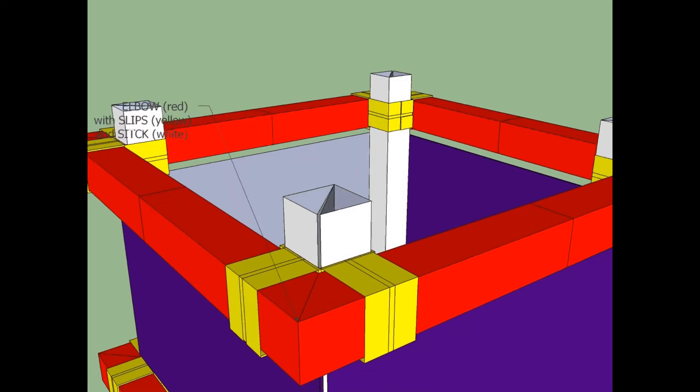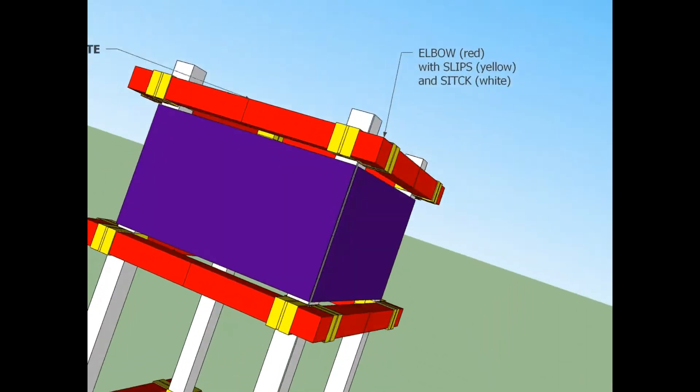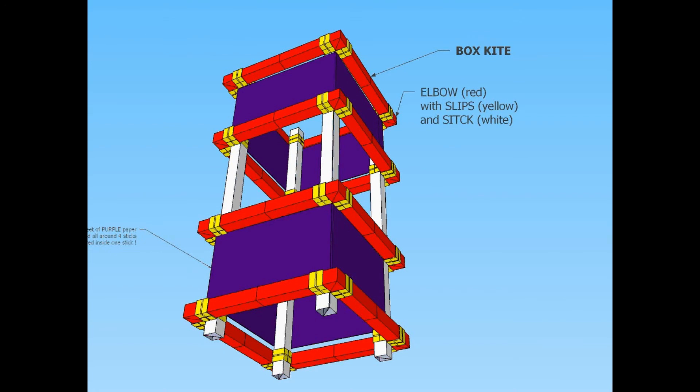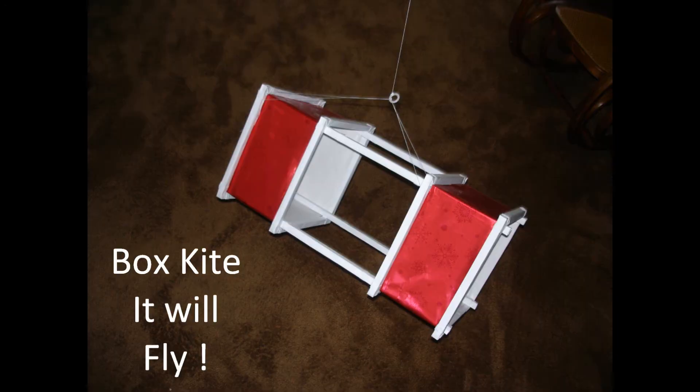Sticks can be bent with some very unique folds to form elbows with a range of angles. 90 degree angle elbows might be used to support constructions that can reach for the sky.